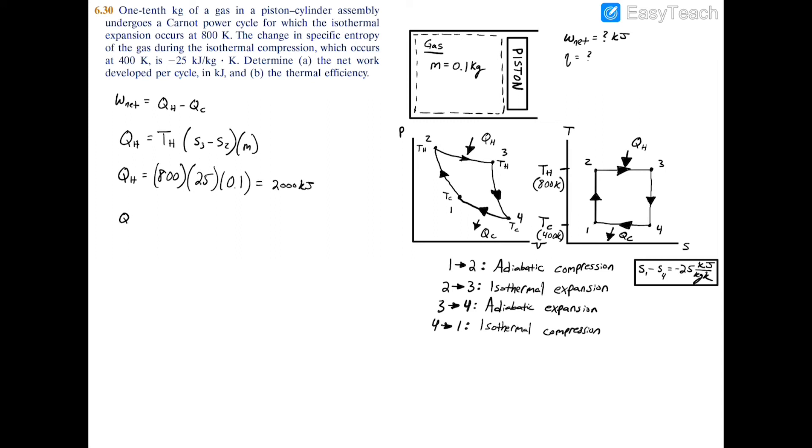We can do the same for Q_c. Q_c = T_c × (S1 - S4) × m.